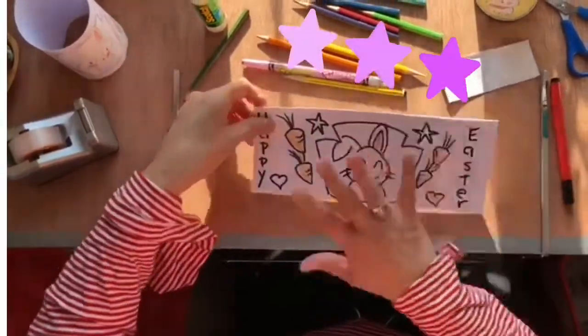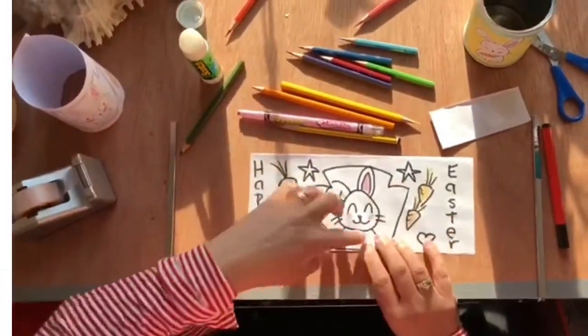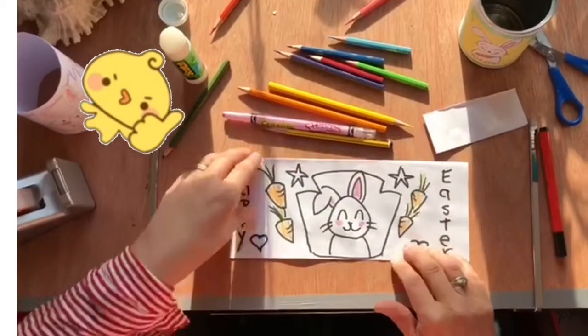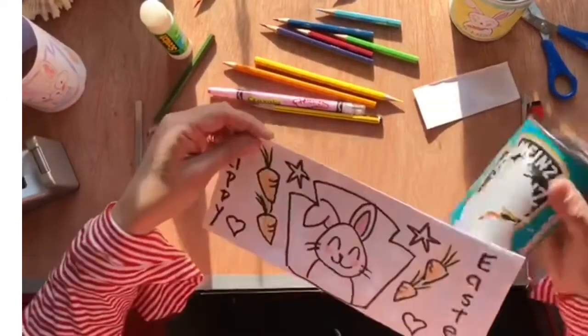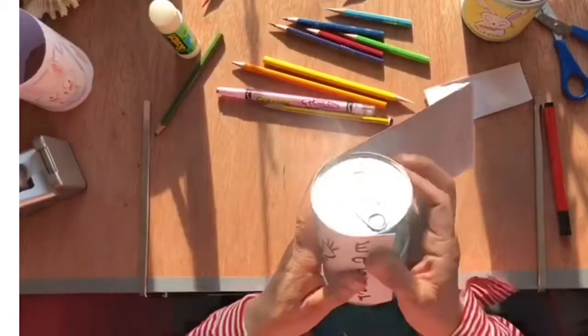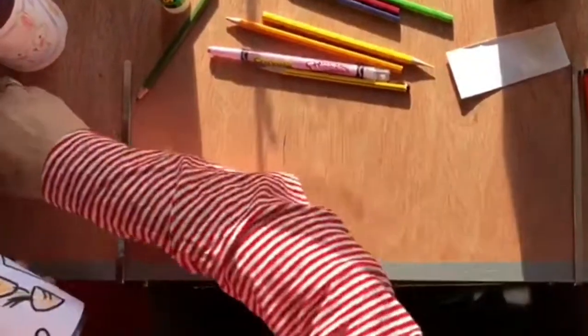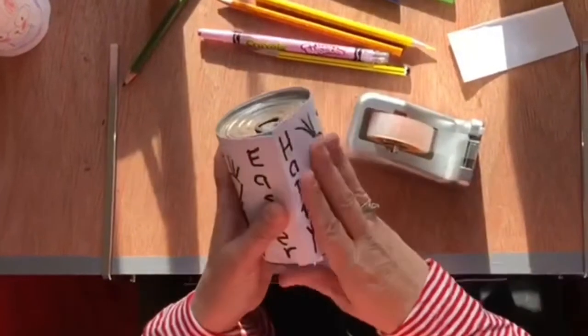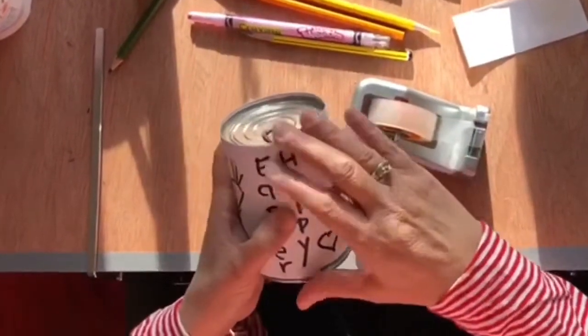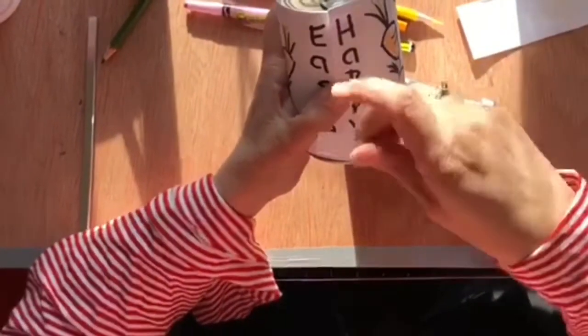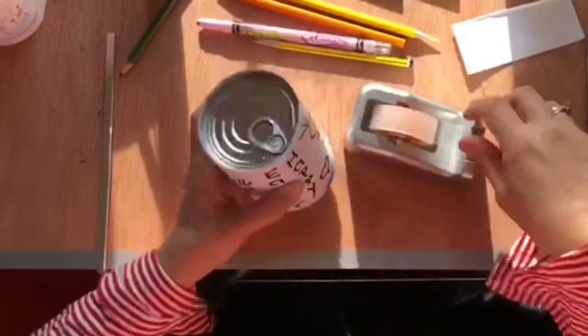And ready? So if you are happy with your drawing, you could add color everywhere. But if you are happy with your drawing, you get your can. Wrap it around. Get some sticky tape. And here you are.